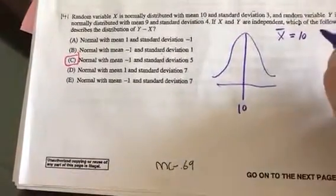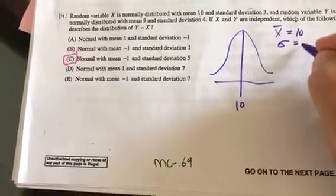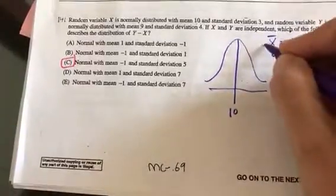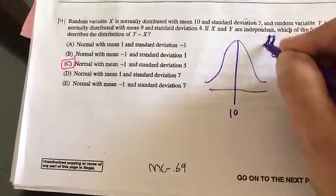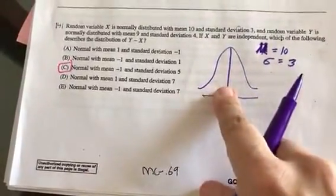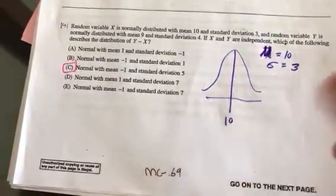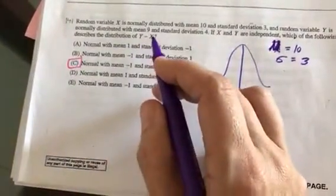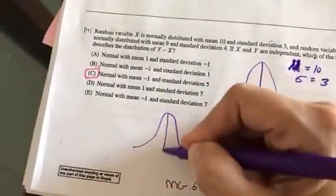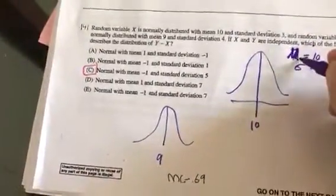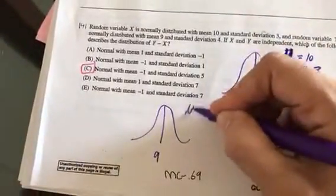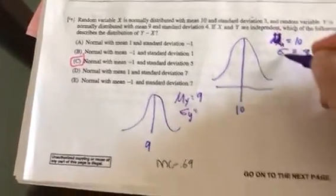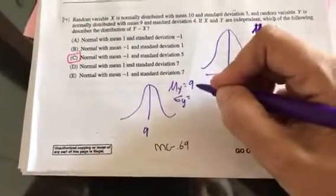So x bar 10. Standard deviation 3. And in fact, it's probably not a sample, it's probably just mu. So this is a population distribution with a mean of 10, standard deviation of 3. And we have another value, y, that's also normally distributed with a mean of 9. Mean 9. So I'm going to put mu x, mu y, mean of 9, standard deviation of y, standard deviation of x. Standard deviation of y is 4.